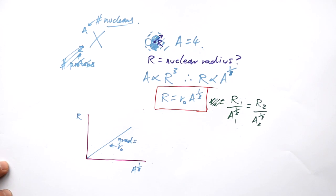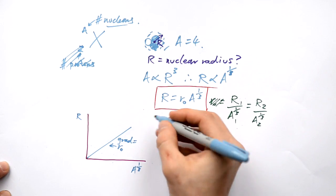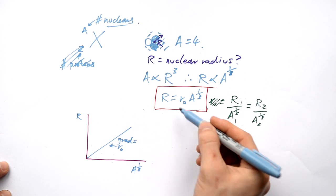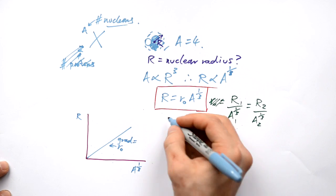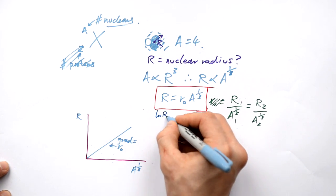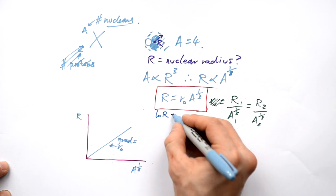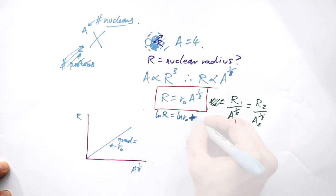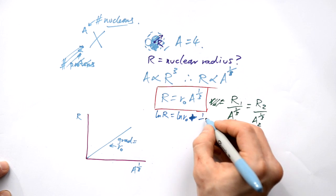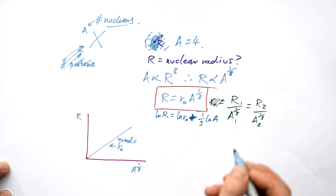But there is a more useful way we can represent this graphically and that's by taking logs. If you don't know how to take logs, have a look at my proportionality and graphs video. Take the log of r, that's going to be equals to the log of r₀ plus 1/3 log A. So there's two log identities that we've used to get from here to here.